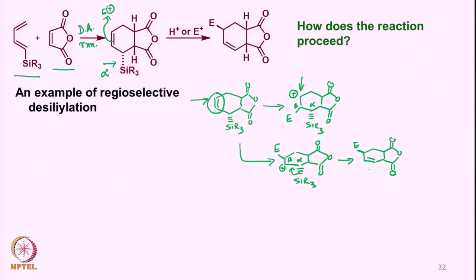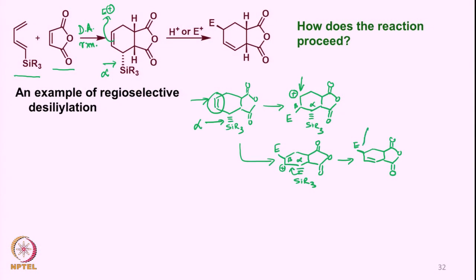As we can see, the electrophile attaches opposite to the carbon-silicon bond — attachment takes place on the opposite face. Since the carbon-silicon bond is alpha-oriented, the electrophile attaches from the beta face. The ring junction and related stereochemistry are decided by the rules of the Diels-Alder reaction.